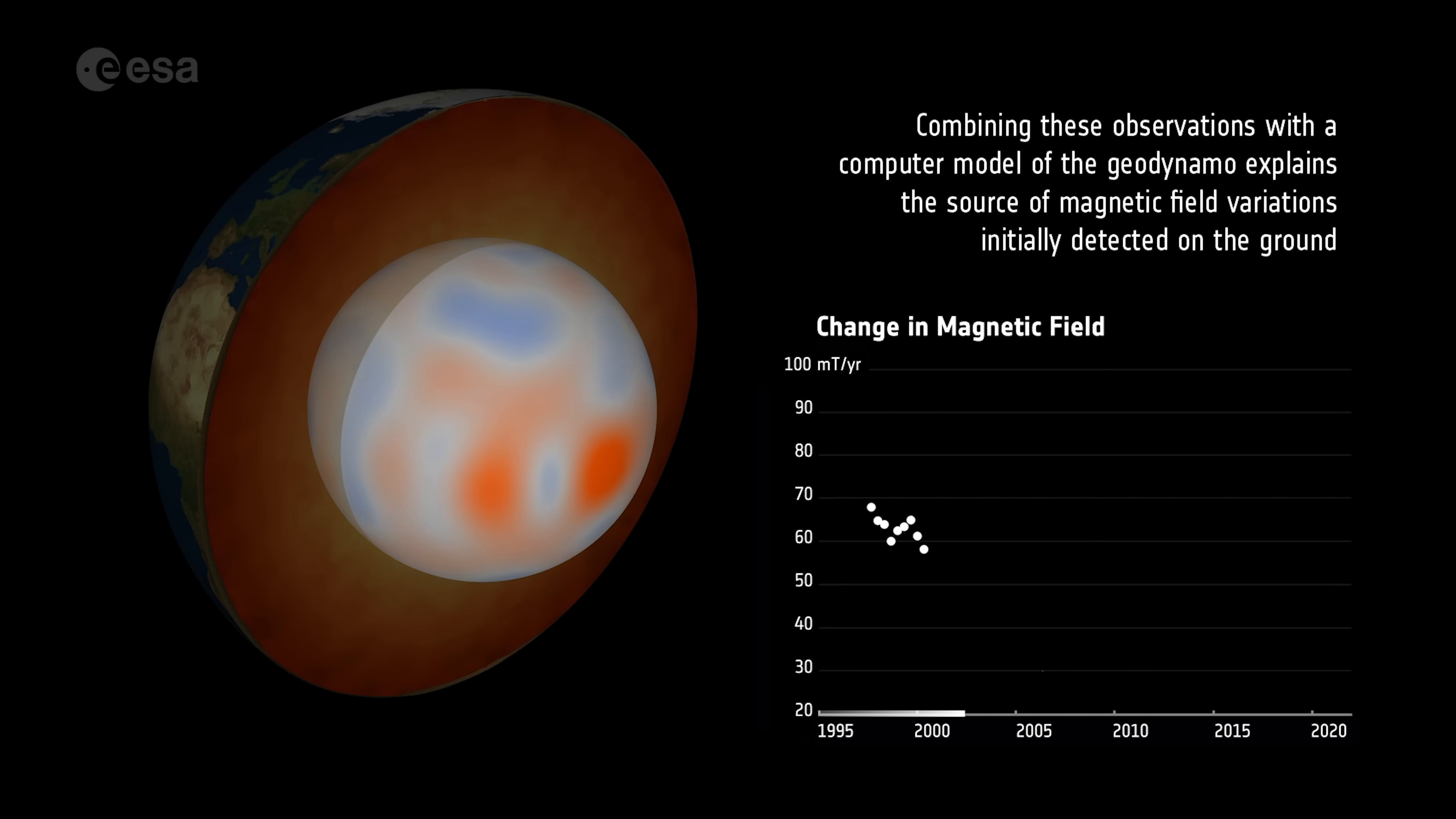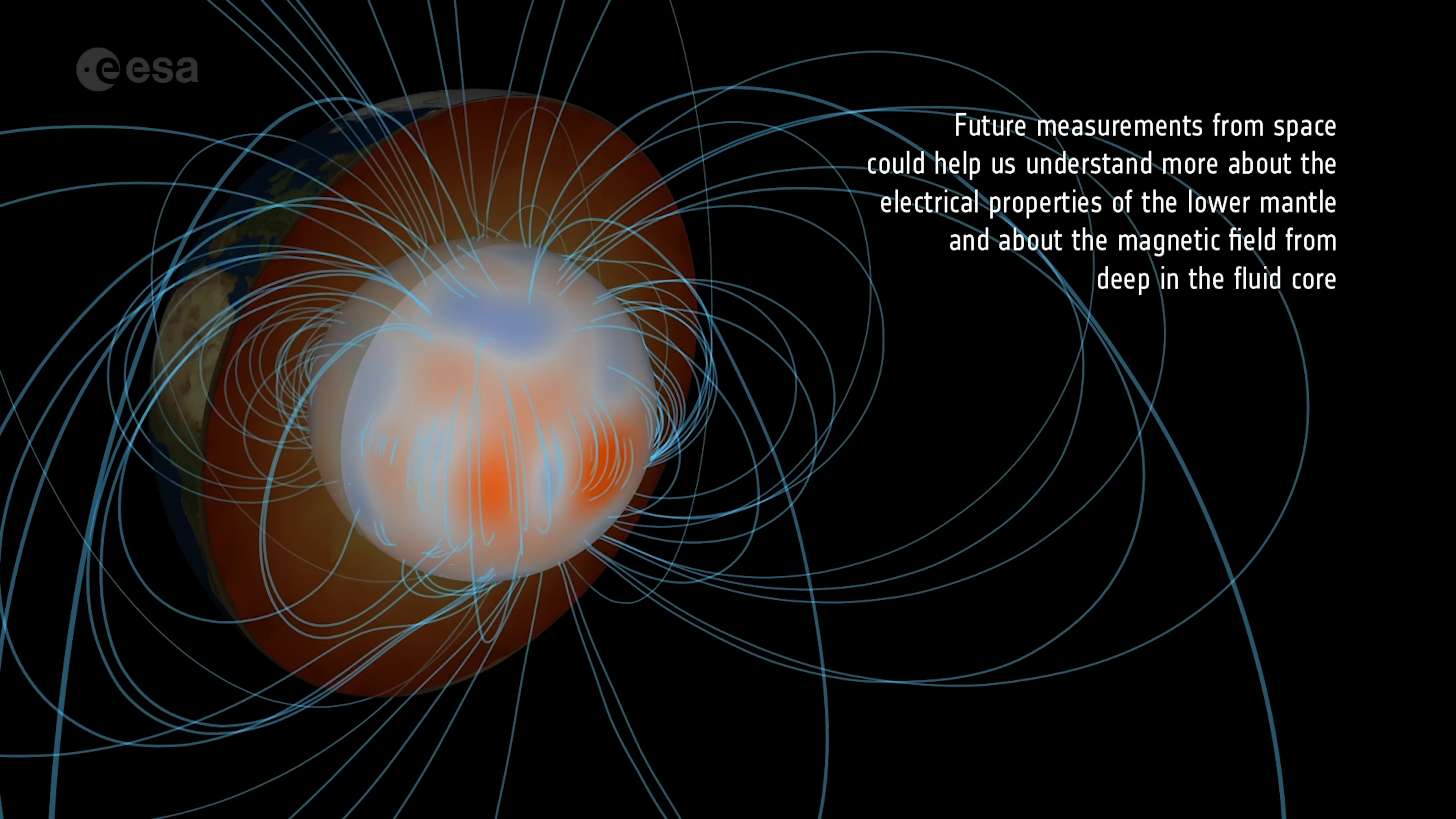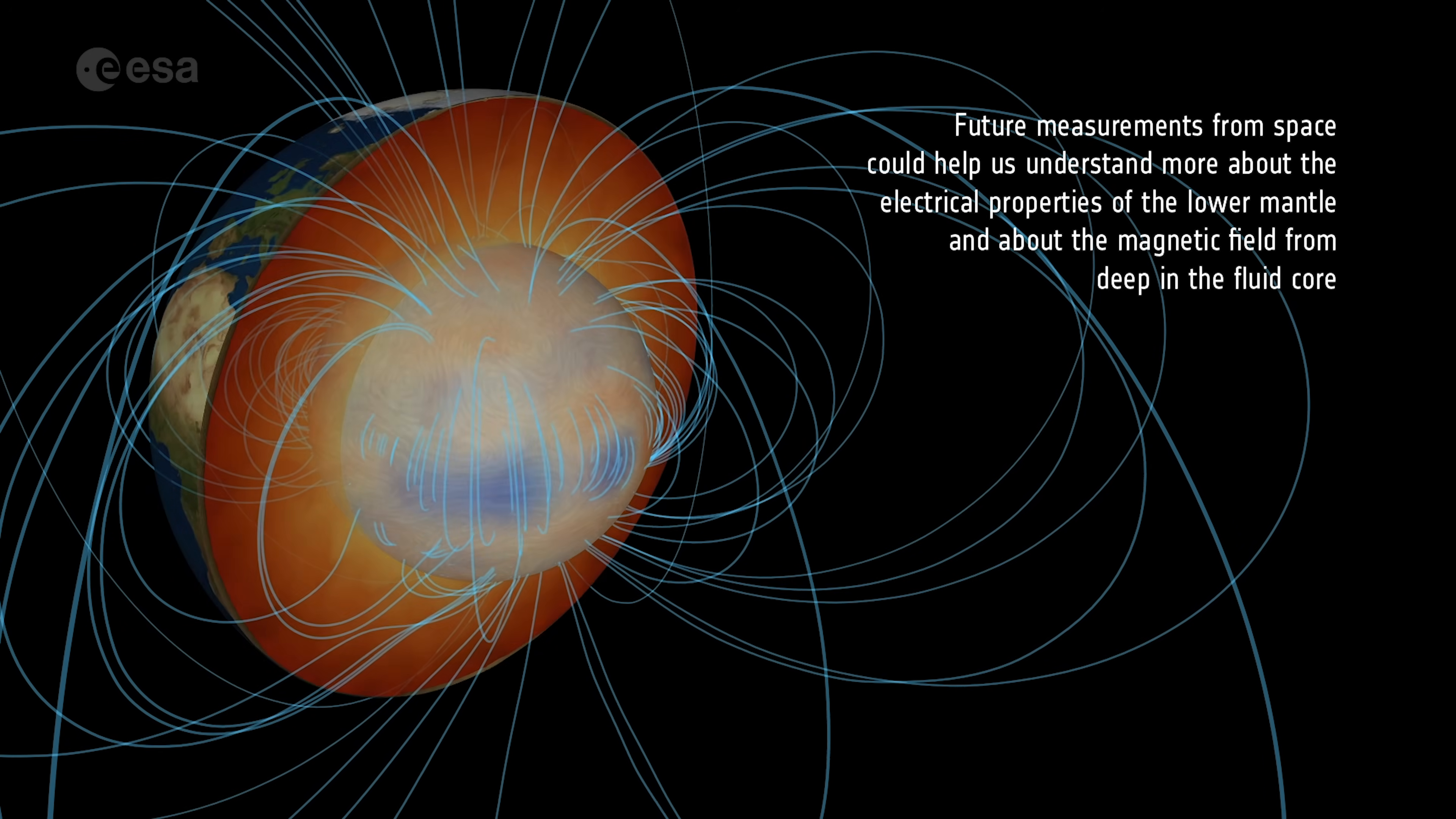Combining these observations with a computer model of the geodynamo explains the source of magnetic field variations initially detected on the ground, coming from deep in the fluid core.